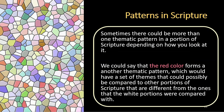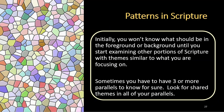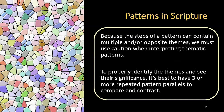Our goal is to choose to look at themes from a certain portion of scripture that form a certain thematic pattern, bringing them to the foreground. There may be other themes present in a scriptural account that are not part of the pattern — comparable to the non-white portions of this mosaic — and they need to remain in the background. Initially you won't know what should be in the foreground or background until you start examining other portions of scripture with similar themes. Sometimes you have to have three or more parallels to know for sure. Because the steps of a pattern can contain multiple or opposite themes, we must use caution when interpreting thematic patterns. It's best to have three or more repeated pattern parallels to compare and contrast.